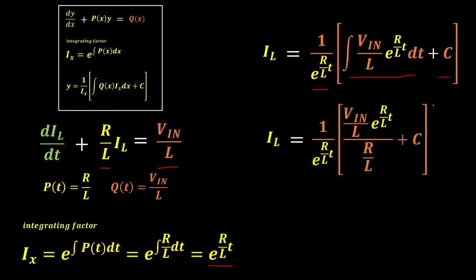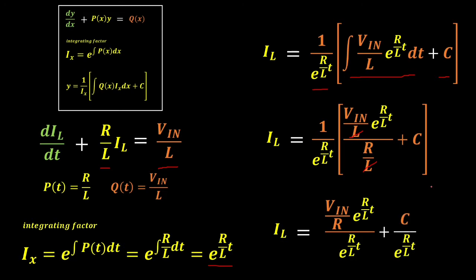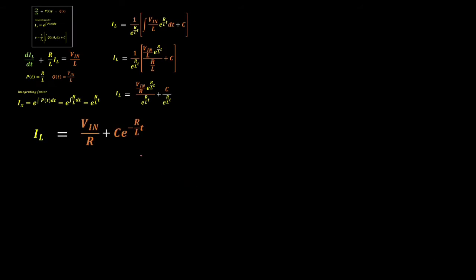Evaluating the integral, we have (VIN/L) times our integrating factor divided by (R/L), then we cancel the L. If we multiply inside the bracket by the term 1 over the integrating factor, we can cancel the integrating factor on the first term, leaving us with VIN/R plus the constant over e raised to (R/L)·t. Transposing that denominator into the numerator, the positive exponent becomes negative. To find the constant C, we evaluate at time equal to 0, where C = I(0) − VIN/R.